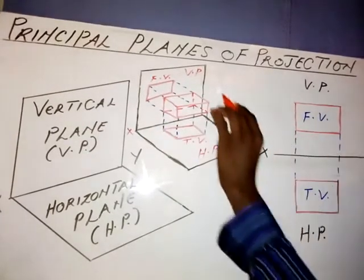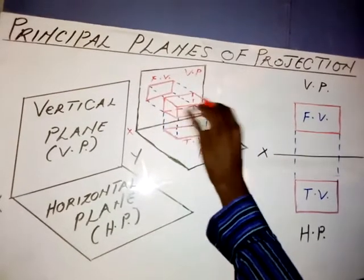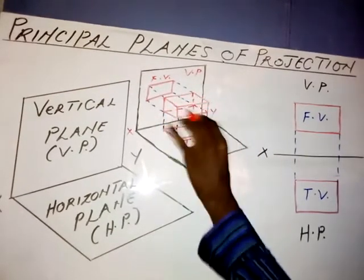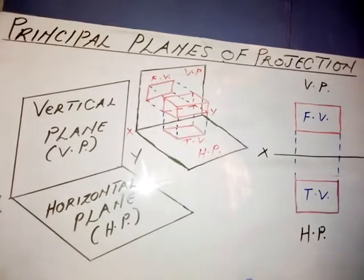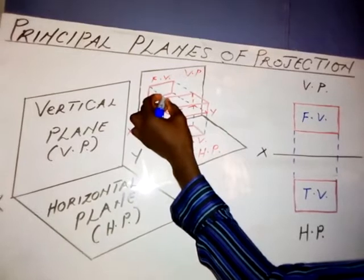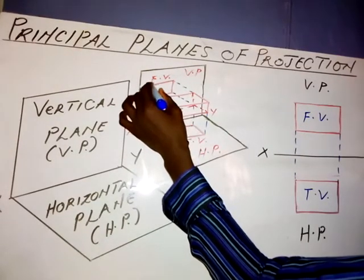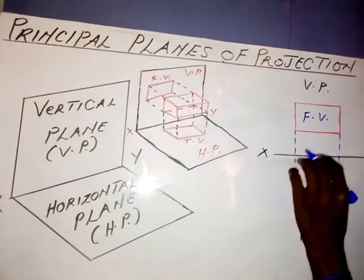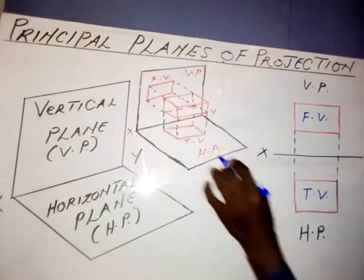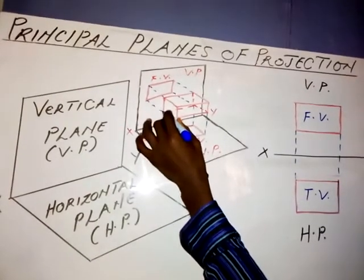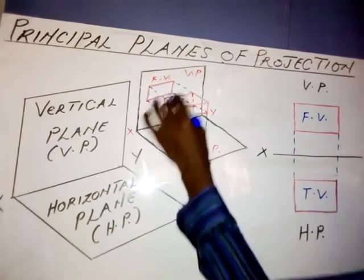Now if I want to produce the front view of this object — the object is placed here — what I need to do is to project a line from this point, and it ends here on the vertical plane. I project a line from this point and it ends here on the vertical plane. From this point also I project a line so it ends here, and from this point I project a line that ends there.